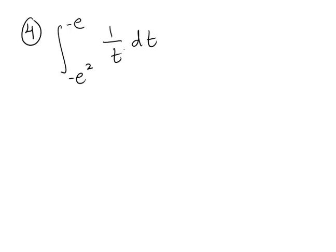Okay, on this one, 1 over t dt, the antiderivative of that - remember the antiderivative of 1 over t is just going to be ln absolute value of t.